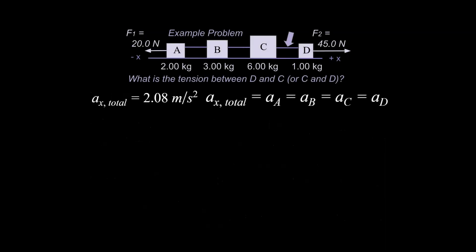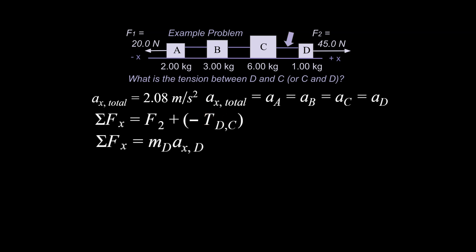Next, following our strategy, we do the sum of forces on an individual component. We focus on D, since the problem asks about the tension force involving D. The sum of forces on D includes the +45 newton force to the right and the tension force to the left — negative — which is the tension on D from C. That's what we're solving for. The second line is mass times acceleration, using D's mass and the system acceleration.